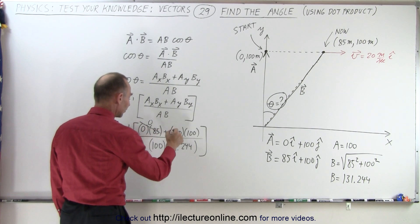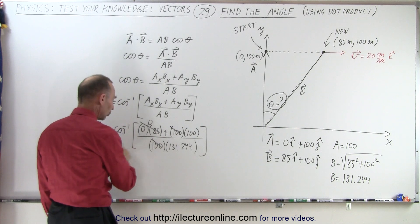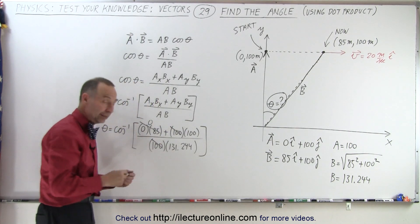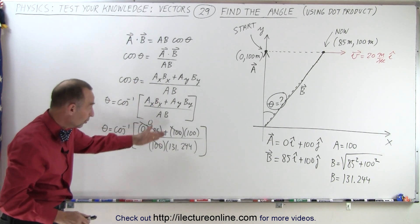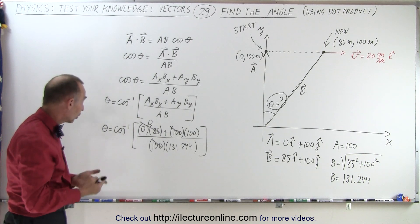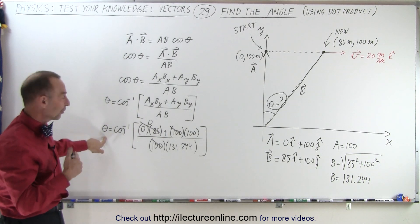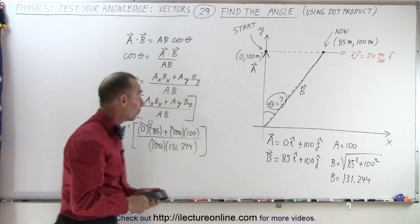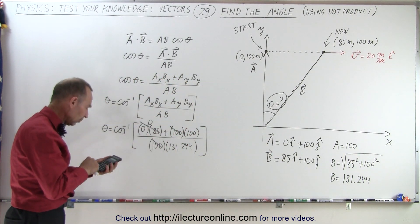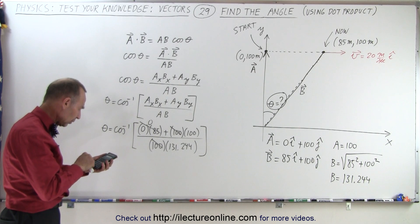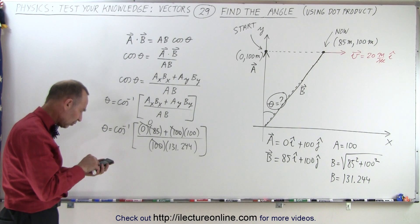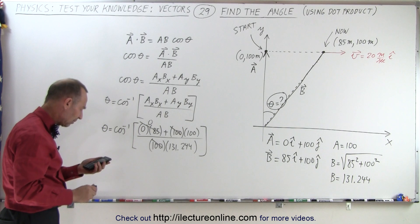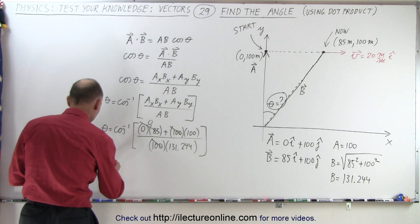Now notice that this is 0. This 100 cancels out this 100, so it's basically the inverse cosine of 100 divided by 131. Realizing that that is a number less than 1, that is good because we cannot take the inverse cosine of a number greater than 1. We probably made a mistake somewhere if it was greater than 1. So 100 divided by 131.244, take the inverse cosine, and we get 40.36 degrees.